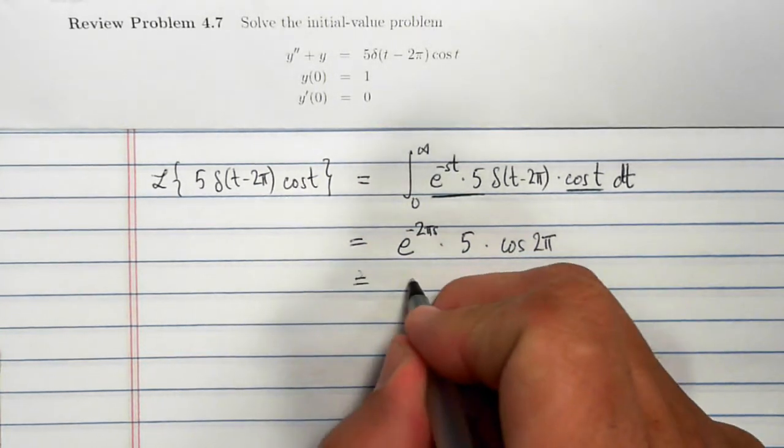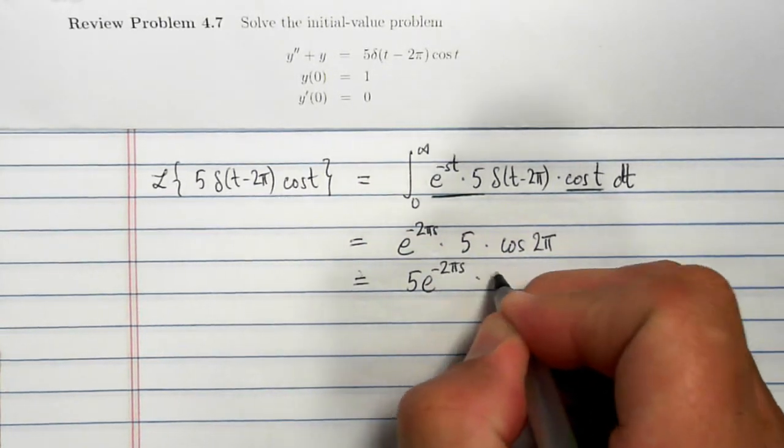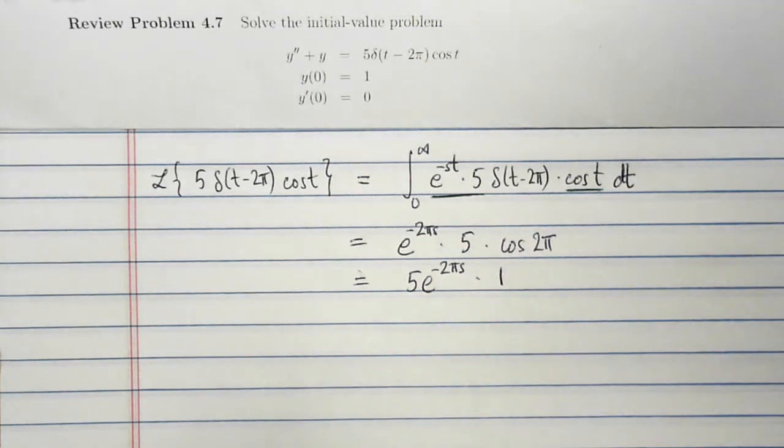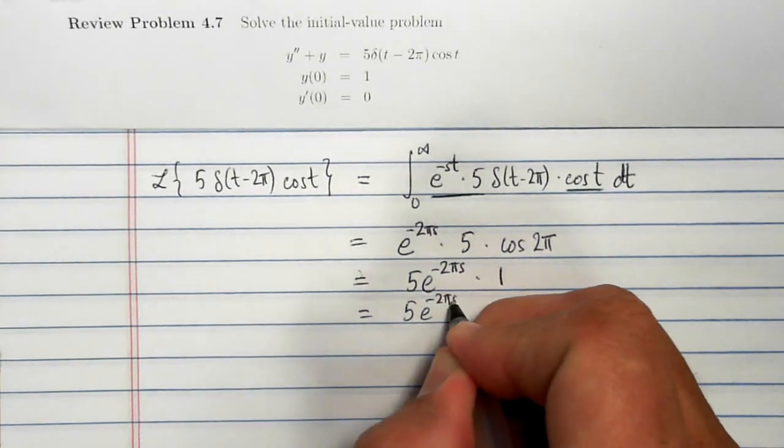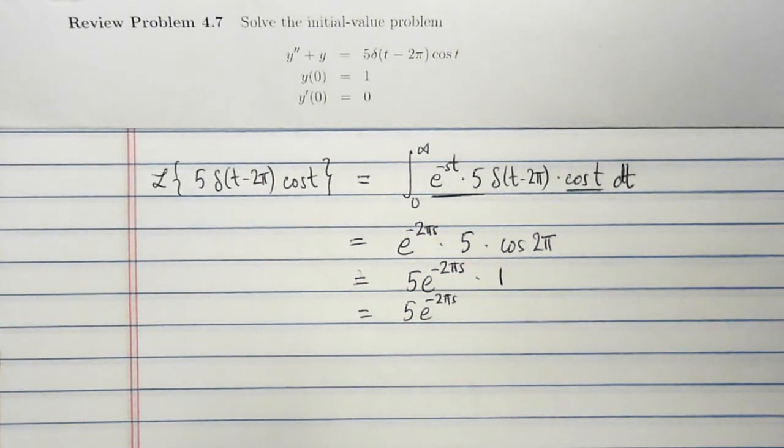And so in this case, that's going to be 5 times e to the minus 2 pi s times 1, since cosine of 2 pi is 1. So 5 e to the minus 2 pi s. That's the Laplace transform of the right-hand side.